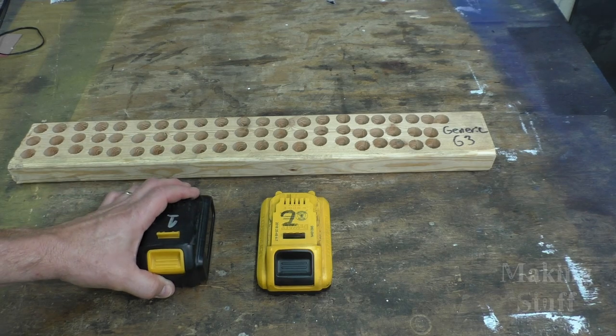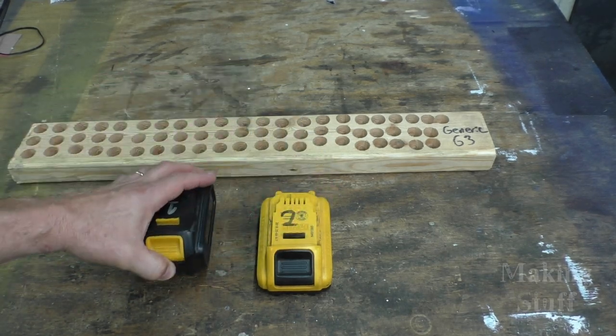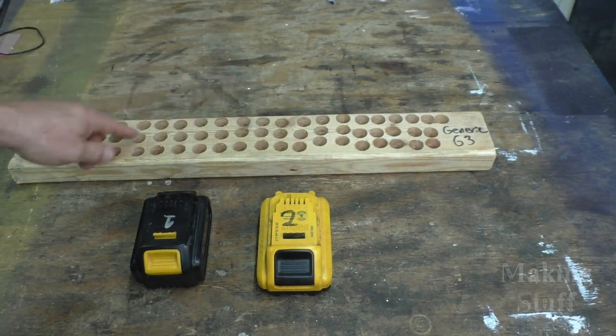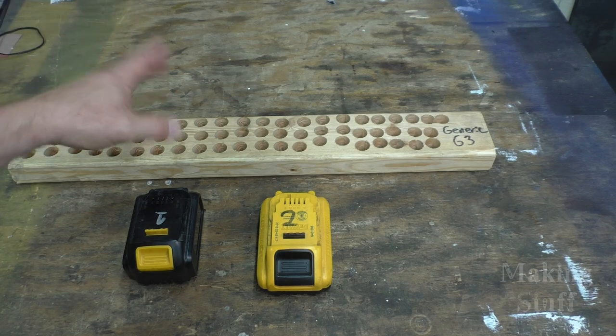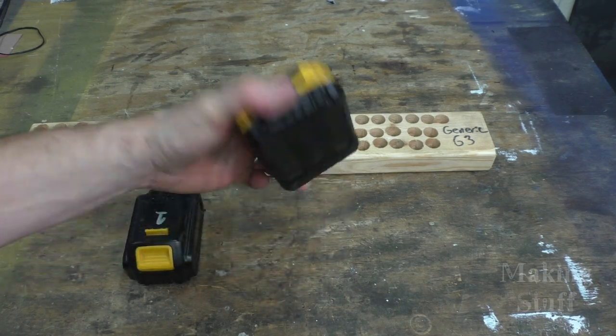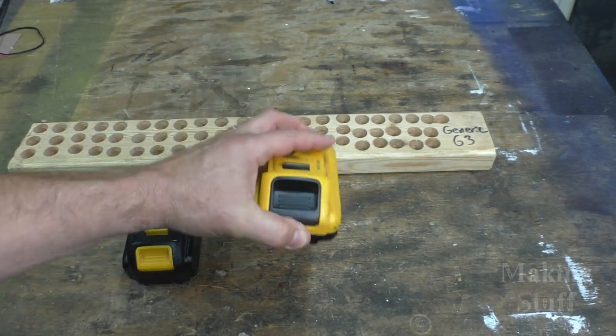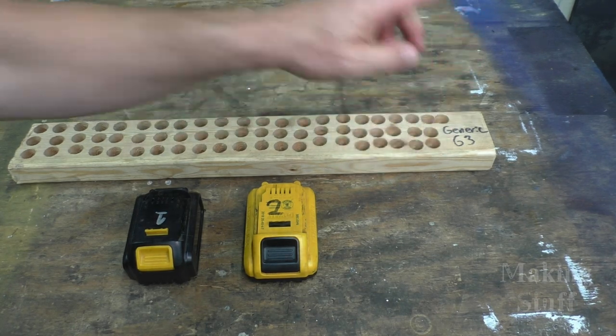And if you remember in that video, the generic battery, which is this one, drilled 63 holes before the tool shut off. So then I let the tool cool down, got another two by four, which I can't find, but I did the same test with the DeWalt battery and I only got 62 holes instead of 63.